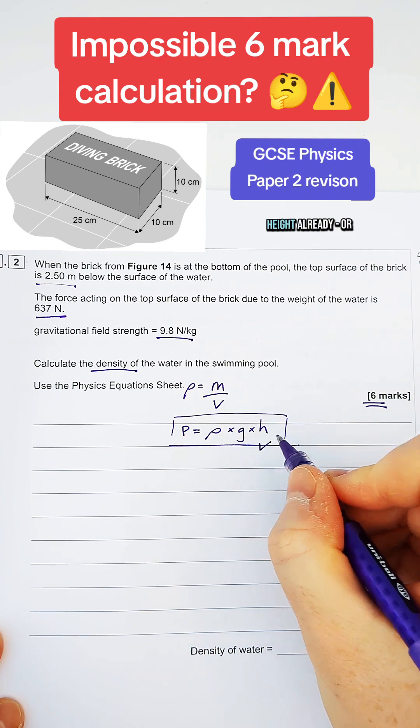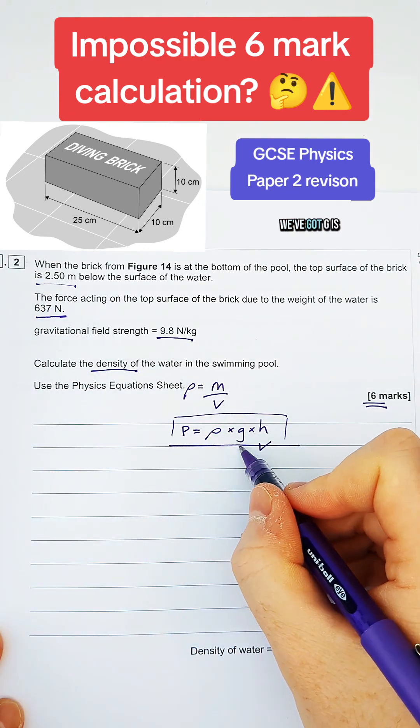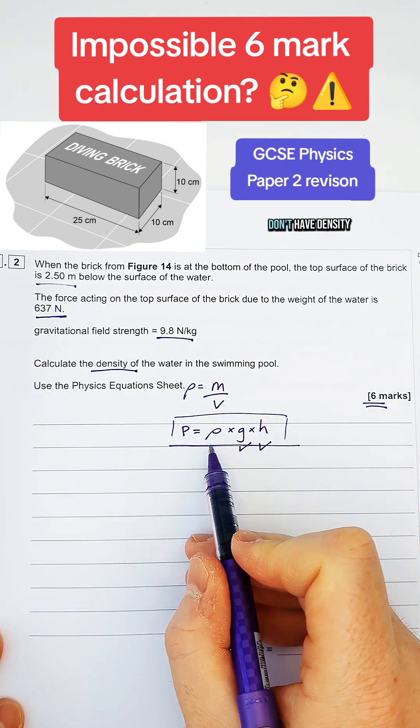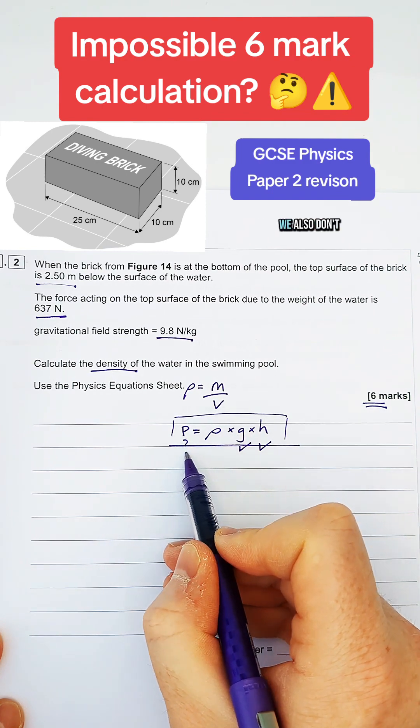Now, out of the things we've got here, we've got the height already, or the depth below the surface. We've got G, 9.8, and we don't have density. Obviously, we're trying to find it. We also don't have pressure.